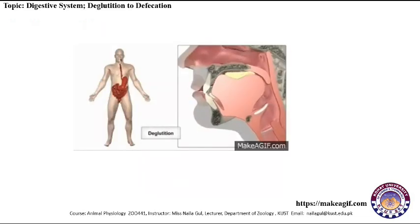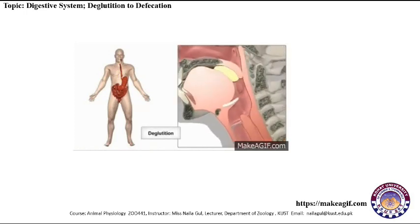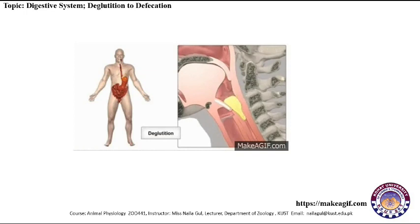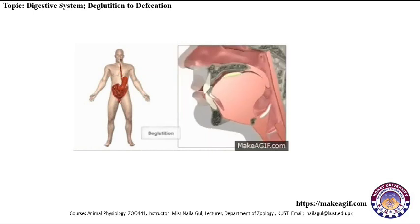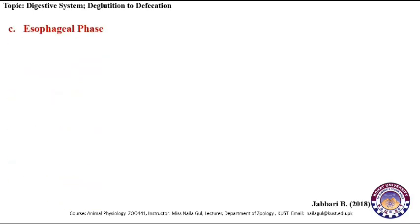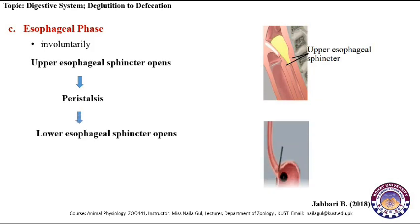The buccal and pharyngeal phases can be observed here. The tongue squeezes the food backward. The uvula closes off the nasal passage while the epiglottis seals the respiratory tract. The third phase is the esophageal phase. This phase is also involuntary in action. The upper esophageal sphincter opens to allow food to pass through the esophagus by peristalsis. When food reaches the lower end of the esophagus, the lower esophageal sphincter opens to allow food to enter the stomach.